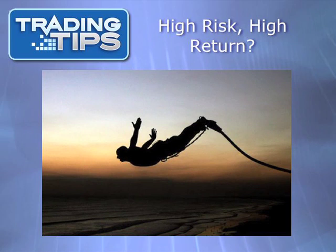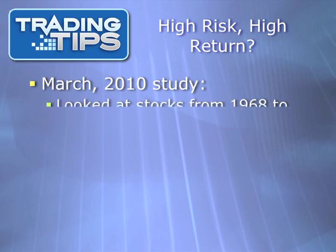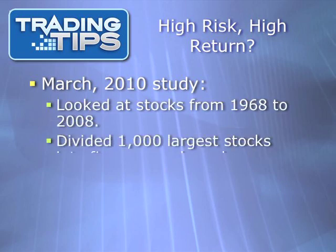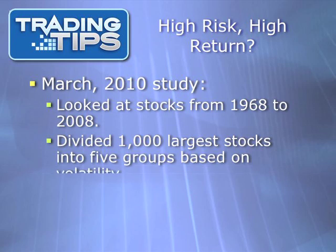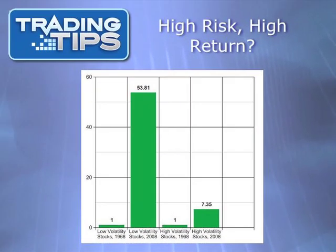Generally it's understood that higher risk brings with it the chance of higher returns. However, there was a study in March 2010 that looked at the thousand largest U.S. stocks and divided them into five groups based on their volatility. It looked at their returns from 1968 through 2008, and over this 41-year period, the stocks in the group with the lowest volatility performed best, and the stocks in the group with the highest volatility performed worst.